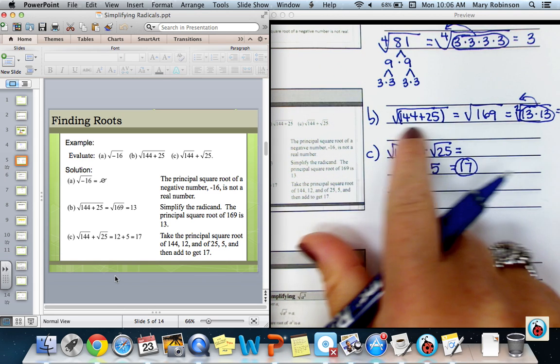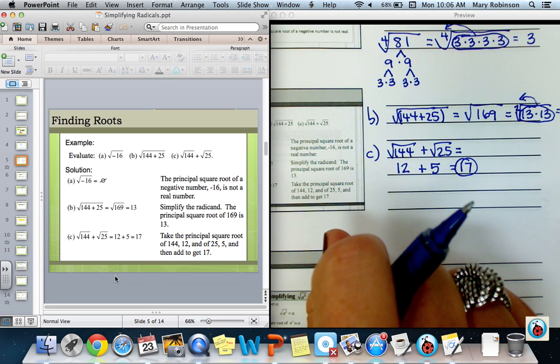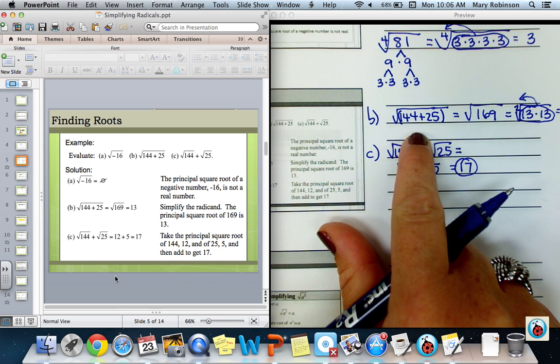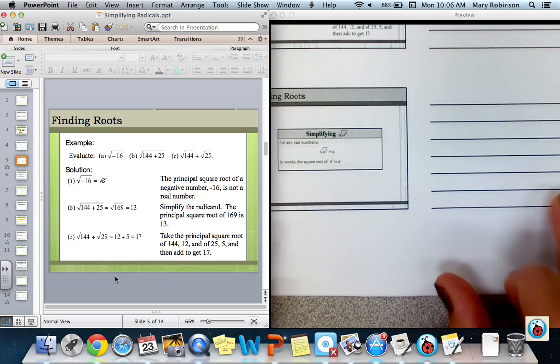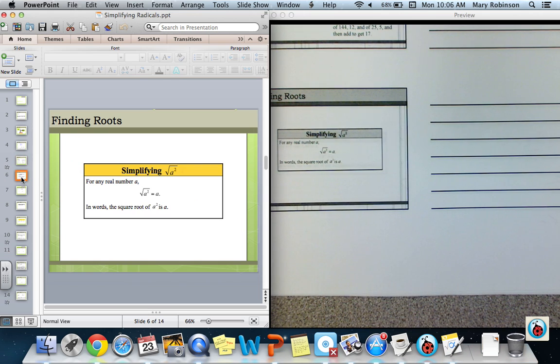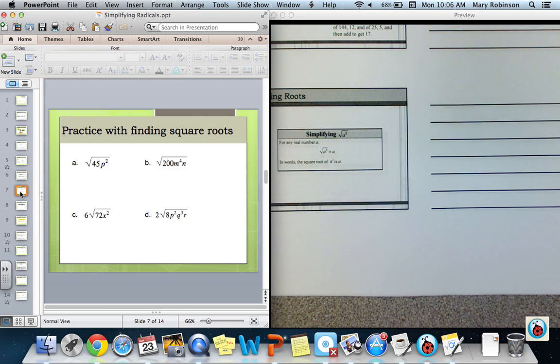Whenever the two numbers are being added under a radical, we consider that a grouping, and we want to simplify that first. Next, the next slide illustrates that simply the square root of a squared is equal to a. So the same rules apply not just for numbers, but also with variables. And we'll do a few examples right here.